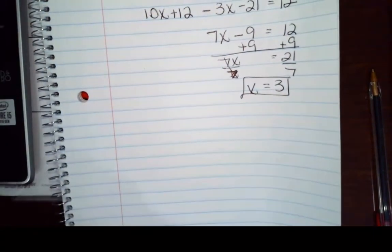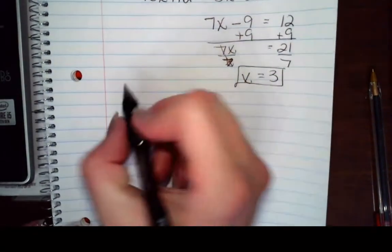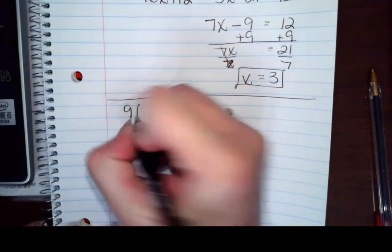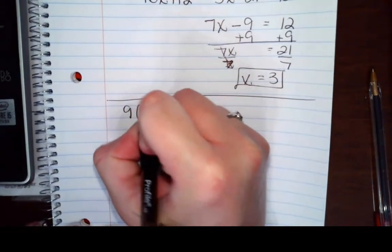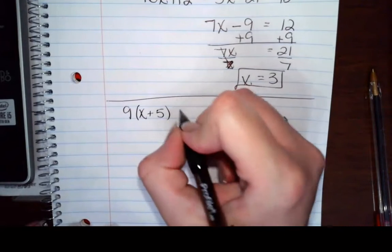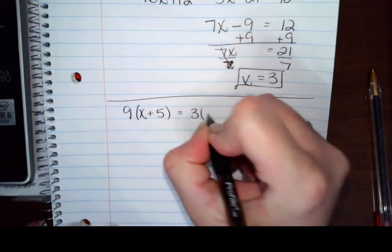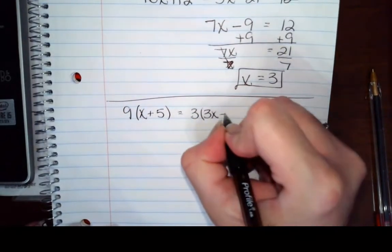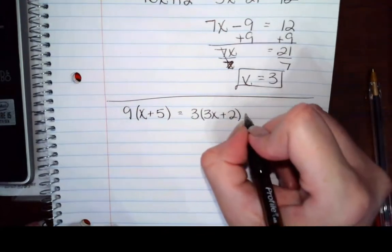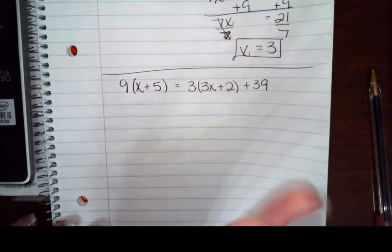Okay, these last few are ending up awfully pretty. Let's start off with no fractions. Give our brains a break. 9 times x plus 5 equals 3 times 3x plus 2 plus 39.